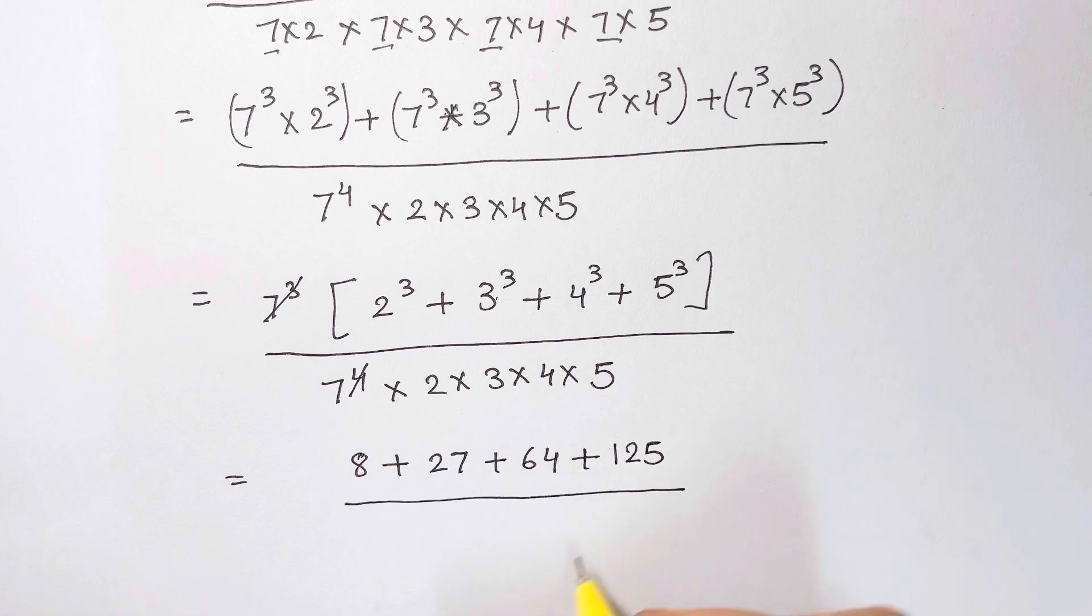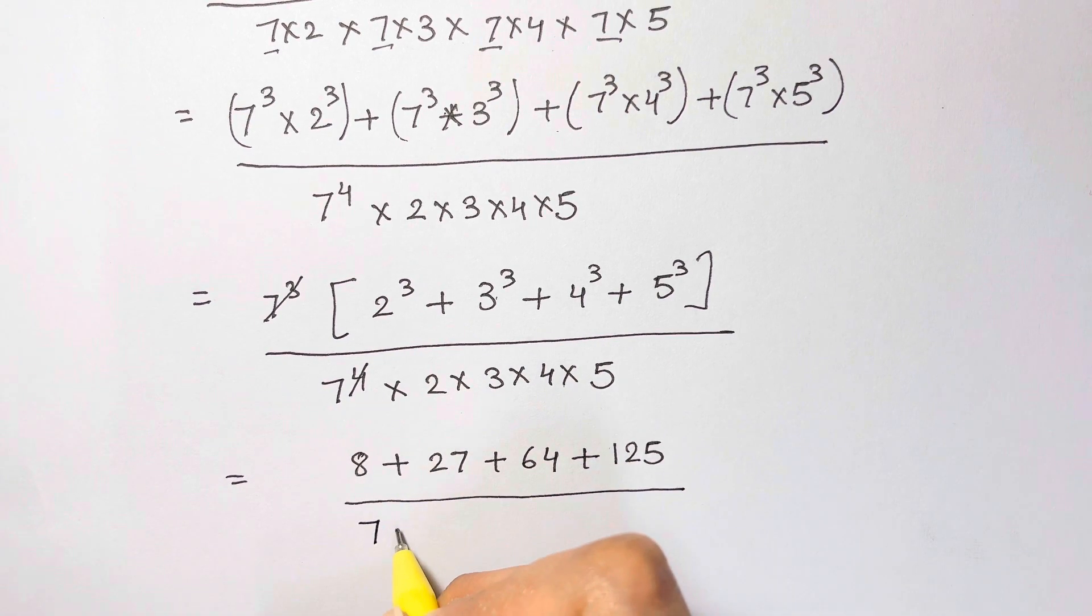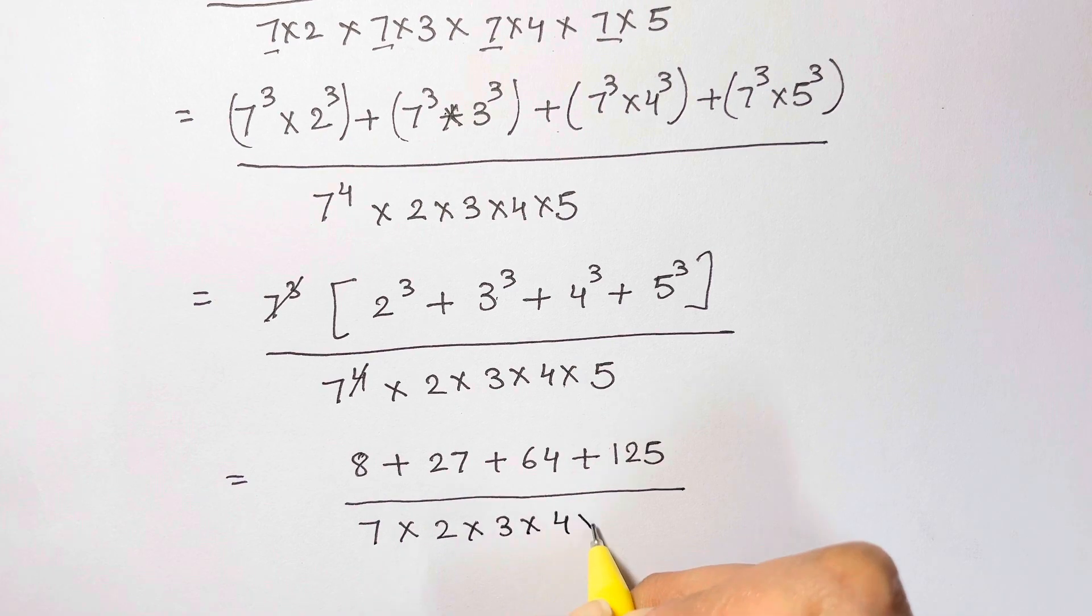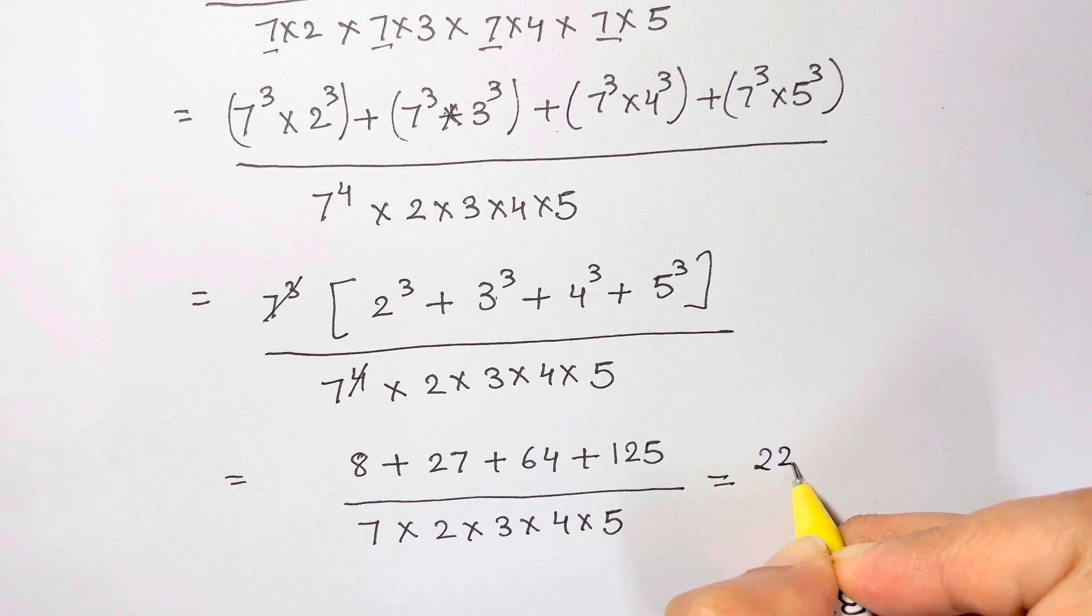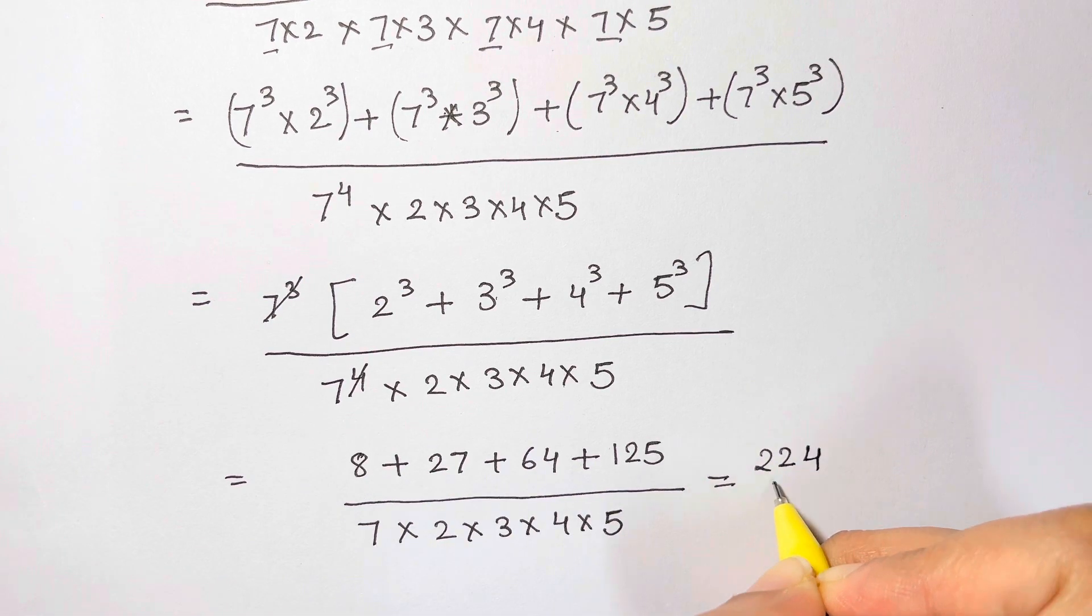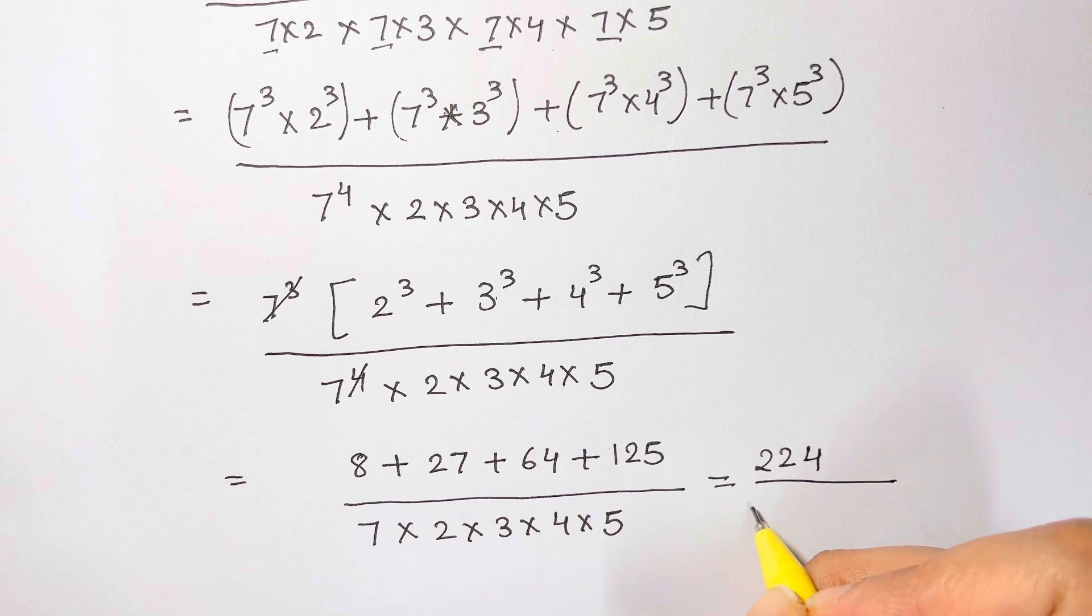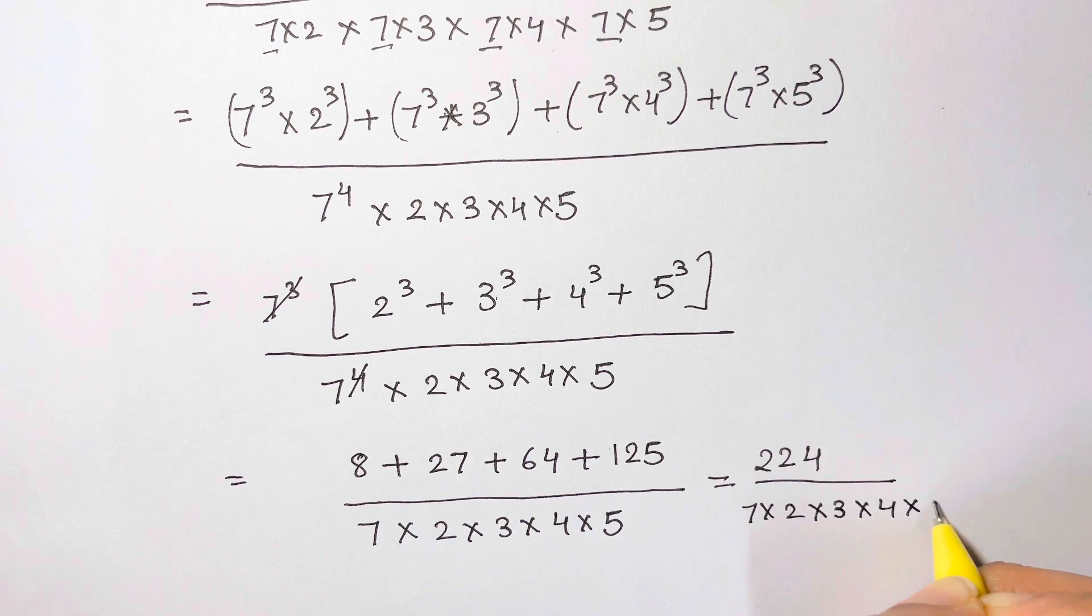Over, I have 7 times 2 times 3 times 4 times 5. Now, let's add them all together. I get 224, divided by, I have the same whole thing, 7 times 2 times 3 times 4 times 5.